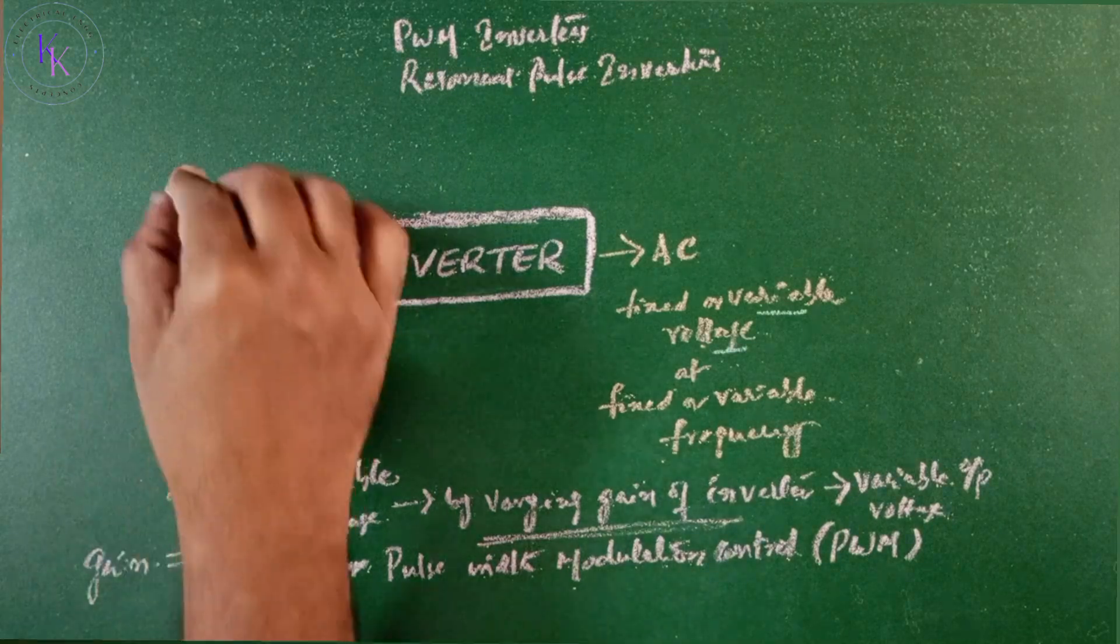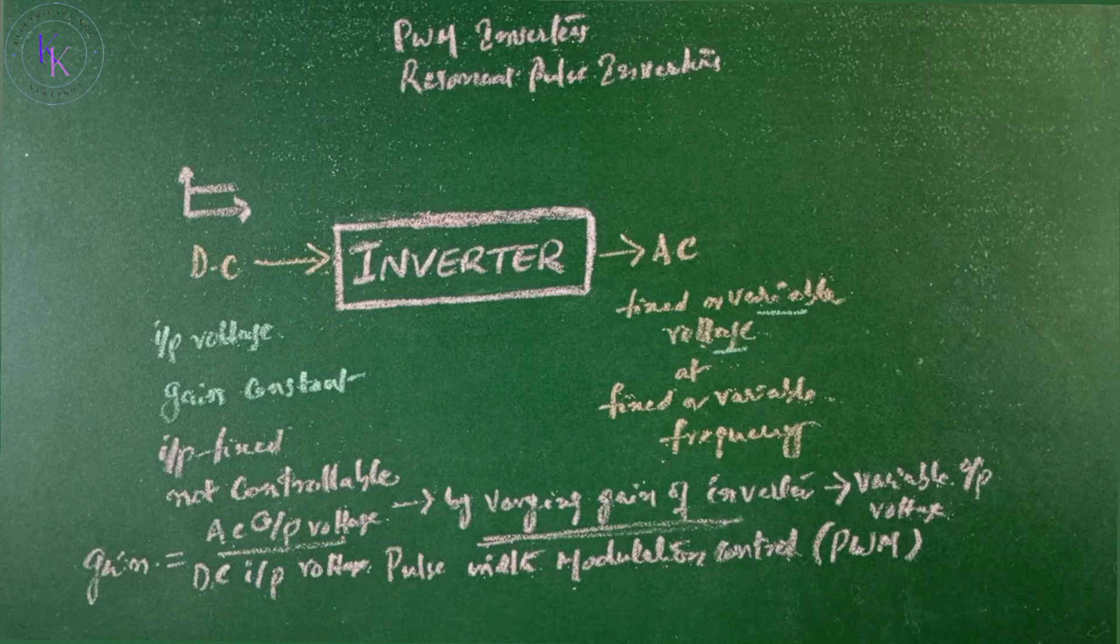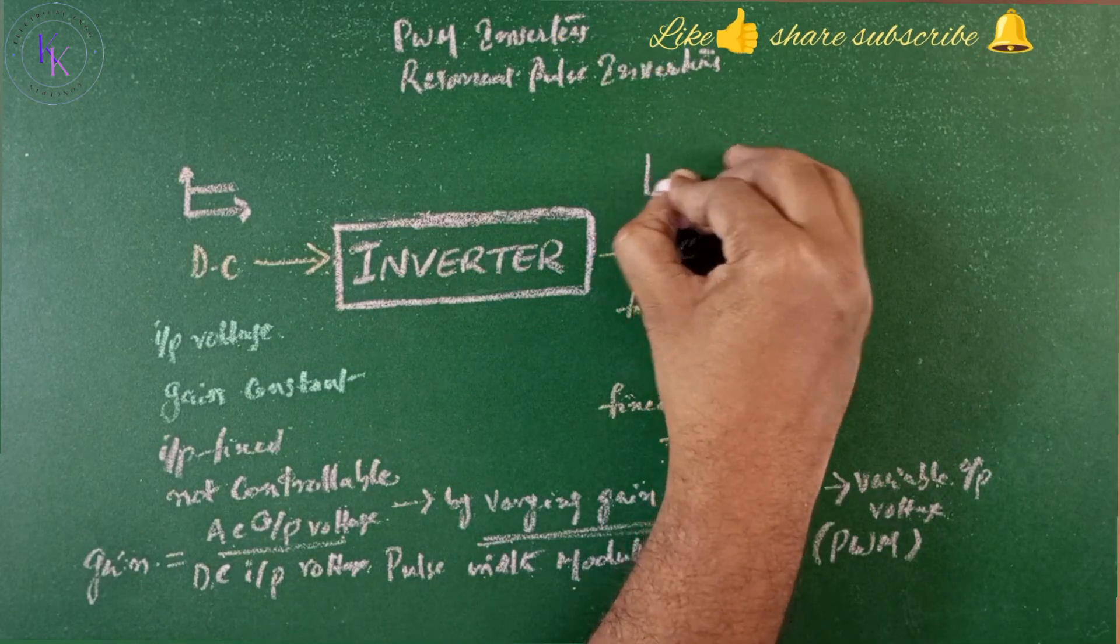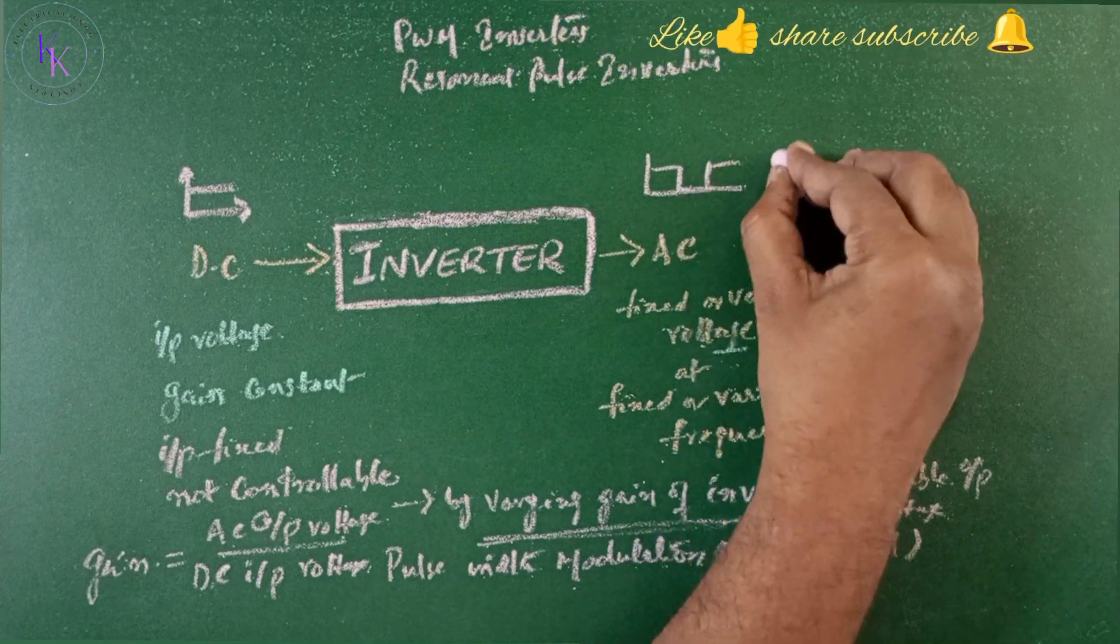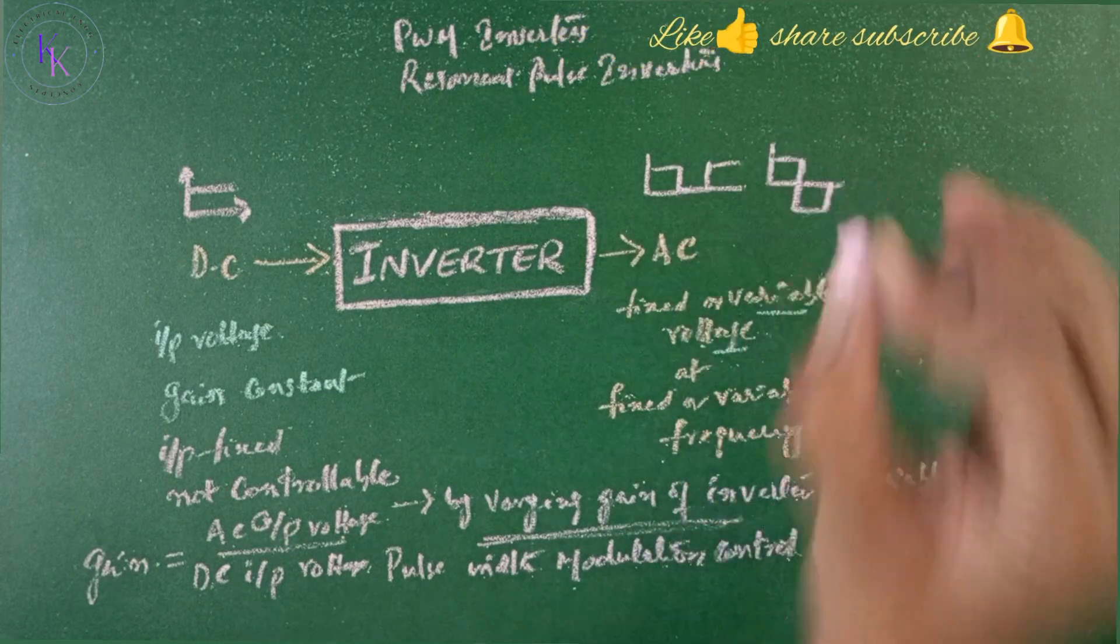For low and medium power applications with DC input voltage, the output voltage may be a square wave or quasi-square wave and is acceptable.